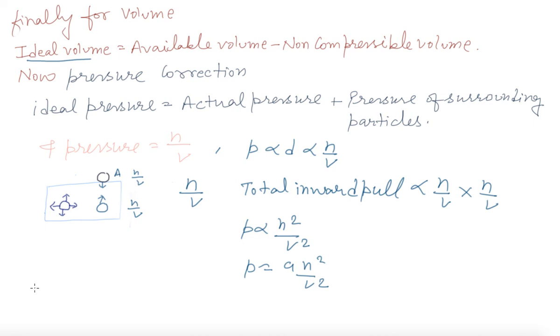Finally, Van der Waal equation for N number of moles will be written like this. P plus A N square by V square. Multiply with V minus NB. And it becomes N R T. So, for N number of molecules, this one becomes the Van der Waal gas equation.